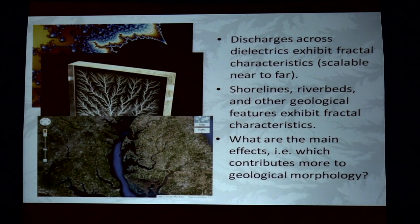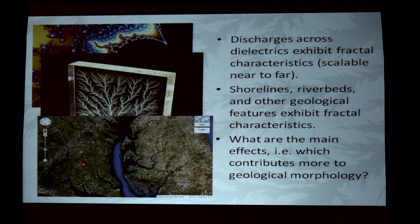In this case it's Chesapeake Bay. We see our dendritic pattern, and some could be brought about by flow of rivers from rainfall and seasonal changes. But what are the main effects? How much of an effect does the fluvial erosion of a riverbed have versus an electrical origin? Can we quantify that? That's what we'll explore.